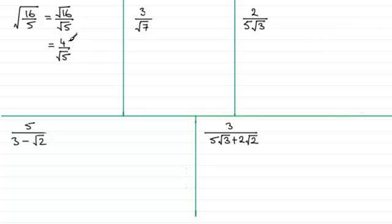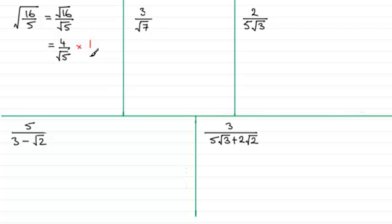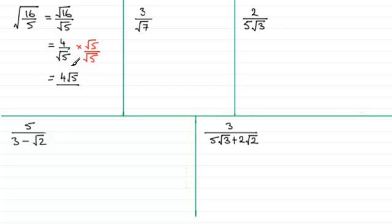It works like this. What we're doing with this fraction is multiplying it by 1 — 4 over root 5 times 1 is not going to change the value. But it's how we create this one. We take the root that we've got in the denominator — in this example it's root 5 — and we multiply top and bottom by root 5. So what we have is root 5 divided by root 5, which is still 1, so it's not going to change the value. But it will change the appearance: we get 4 times root 5, which is 4 root 5, and on the bottom root 5 times root 5 is the square root of 25, or simply 5.